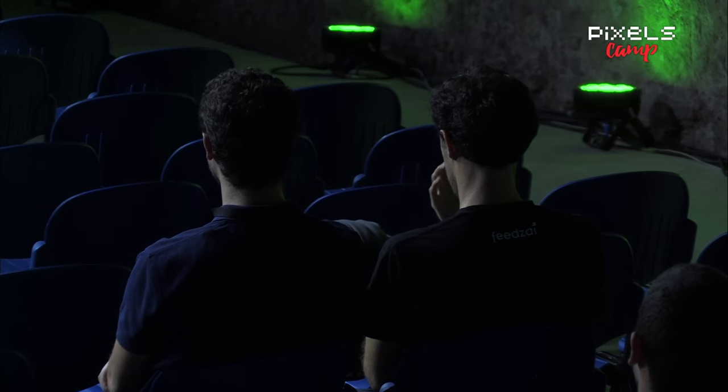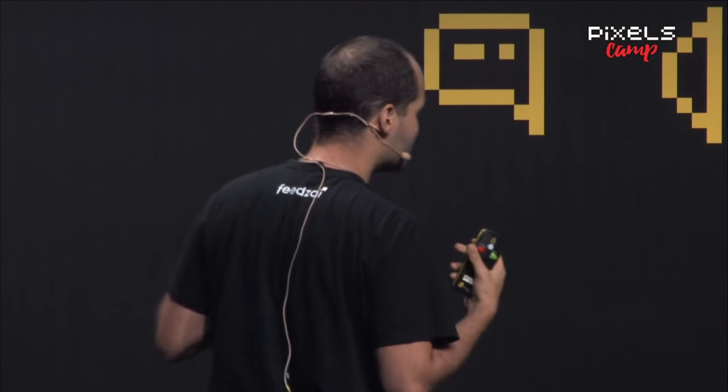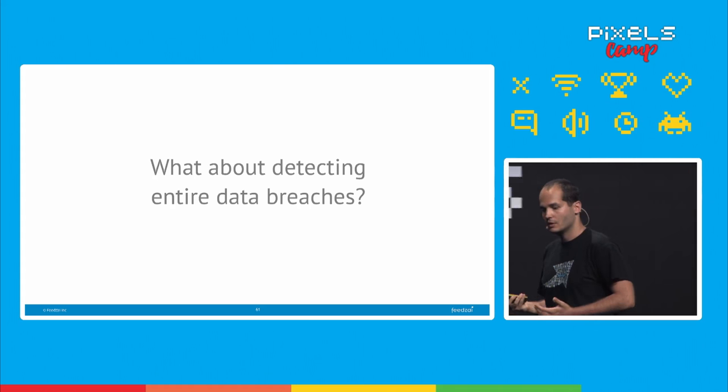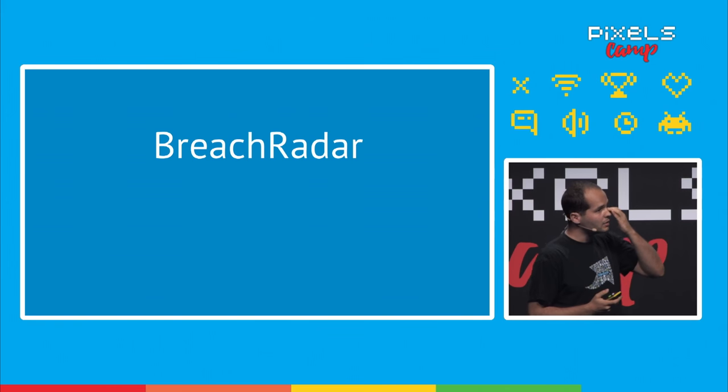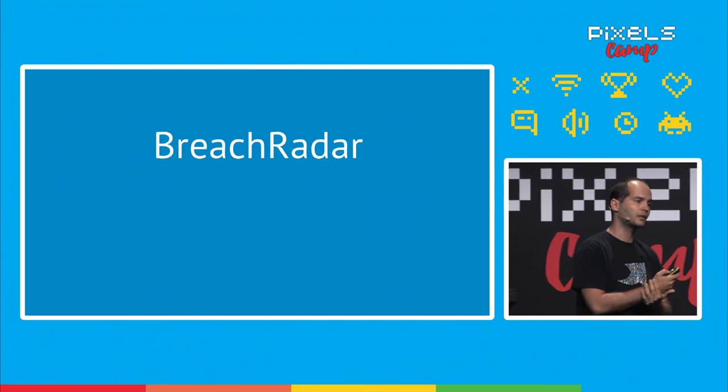At FeedzEye, we're fighting fraud and we ask ourselves all the time: what can we do to stop this? The question that started this project was: can we detect compromised cards? And I would go as far as asking: can we predict that a card will be a victim of fraud before it's actually used for fraud? The goal is to preemptively stop an attack, apart from just blocking transaction by transaction. We wanted to detect, if possible, entire data breaches. We call this Breach Radar — an algorithm we developed in our research team to tackle this problem.